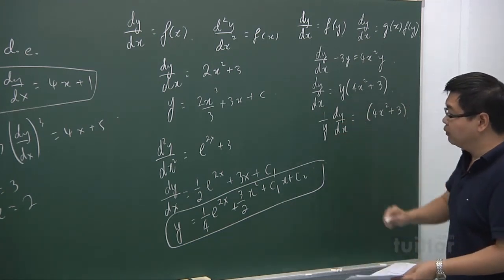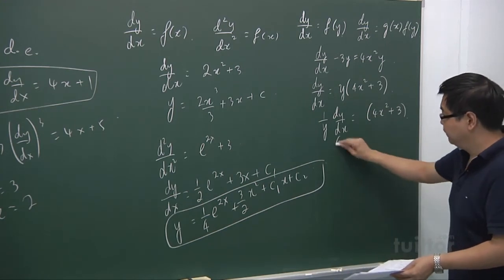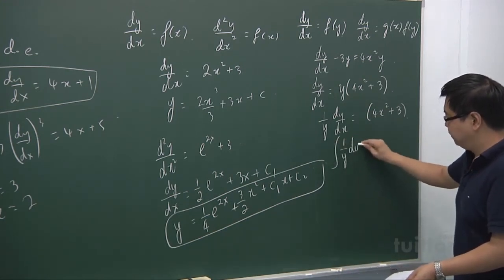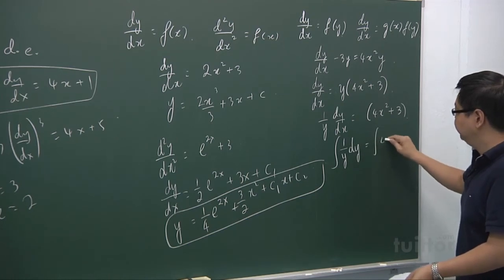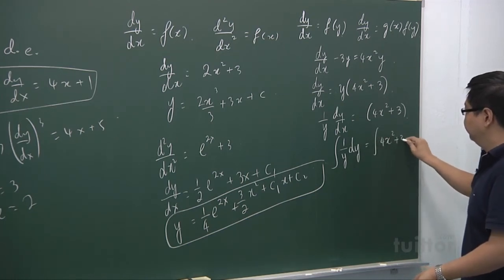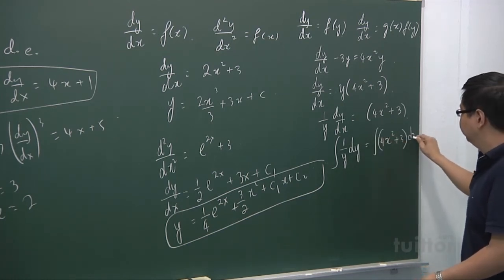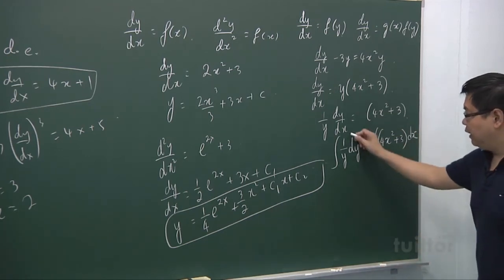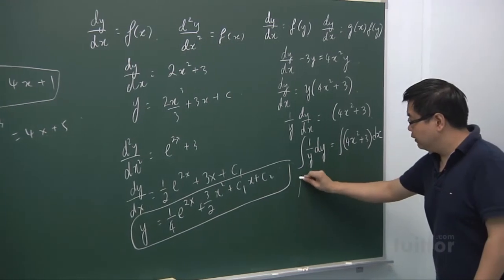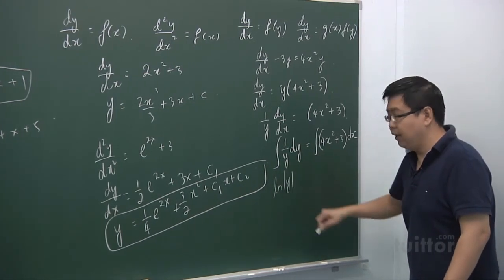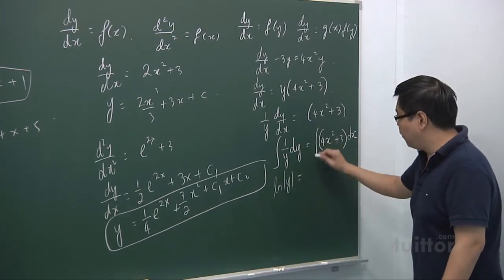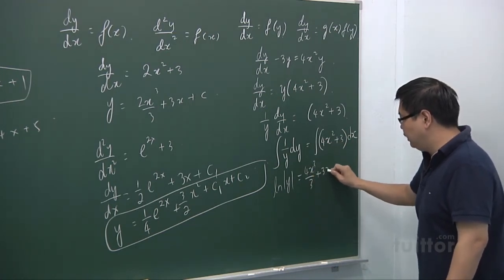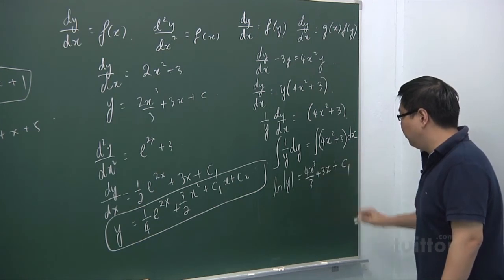Then you integrate both sides with respect to x. The integral of 1/y gives ln|y|, and integrating 4x² plus 3 gives (4/3)x³ plus 3x plus c₁.